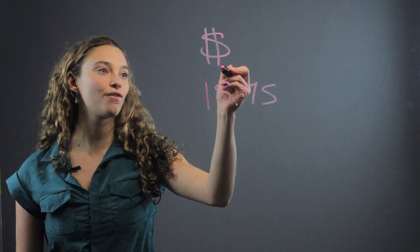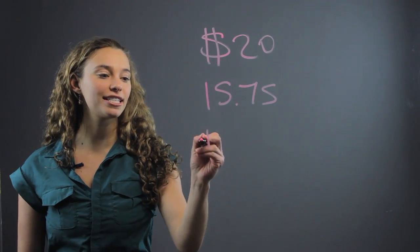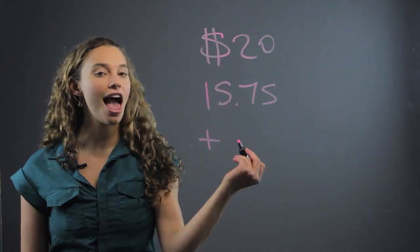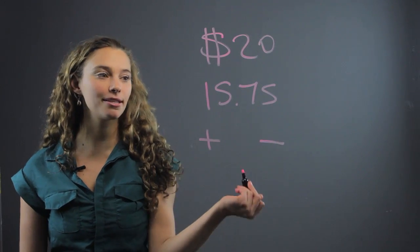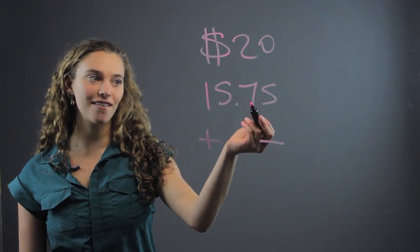Well, how do you make change for $20? There's two ways. One is counting up, adding, and the other is counting down, subtracting, counting down from 20 or counting up from $15.75.